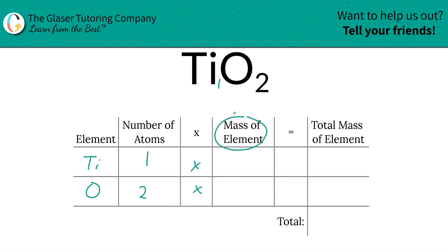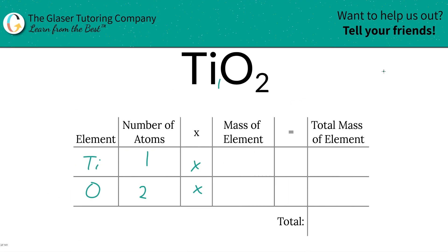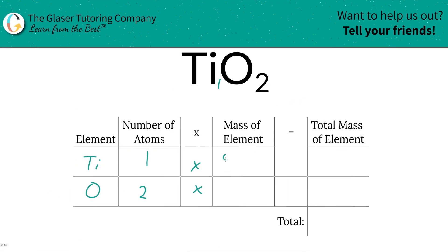Then we're simply going to multiply those number of atoms by the mass of each element. These masses are always found in the periodic table. 47.90 for titanium, oxygen is 16.